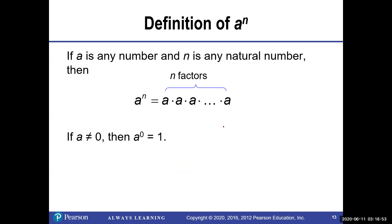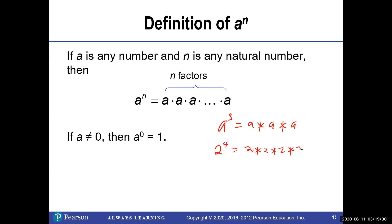If a is any number and n is any natural number, then a to the n means a multiplied by itself n times. So a to the third means a times a times a. This is not the same as 3a. For instance, 2 to the 4 means 2 times 2 times 2 times 2, which equals 16 — not 8. I've seen students multiply 4 by 2 and get 8, which is incorrect. Also, any number to the power of zero is 1, except that 0 to the 0 is 0.